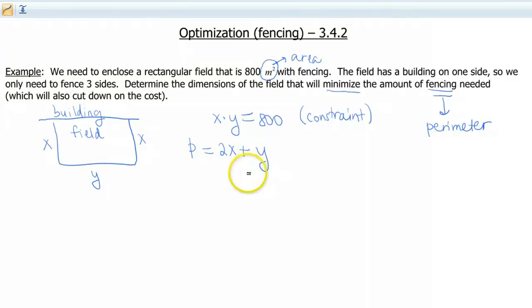Now, if you've memorized a formula for the perimeter of a rectangle, you may think, oh, she's missing a side, right? It should be 2x plus 2y. But no, we do not have to fence along this building. It said we only need to fence three sides.